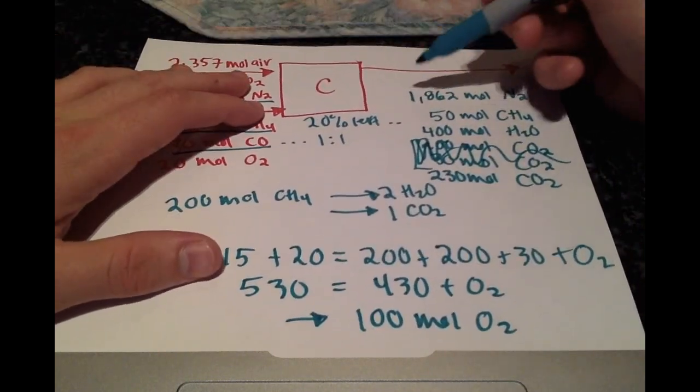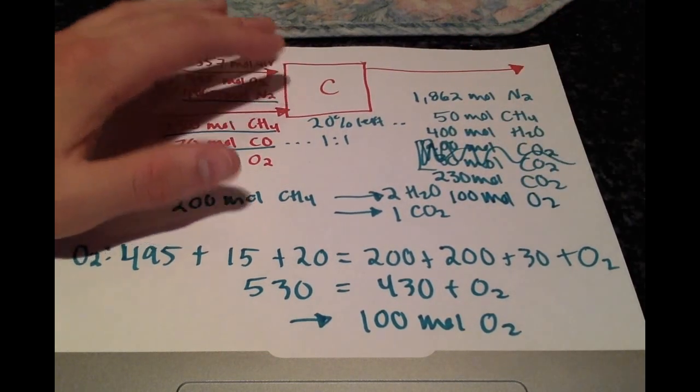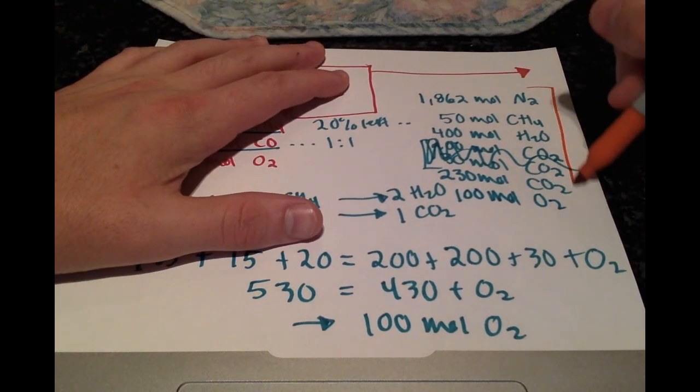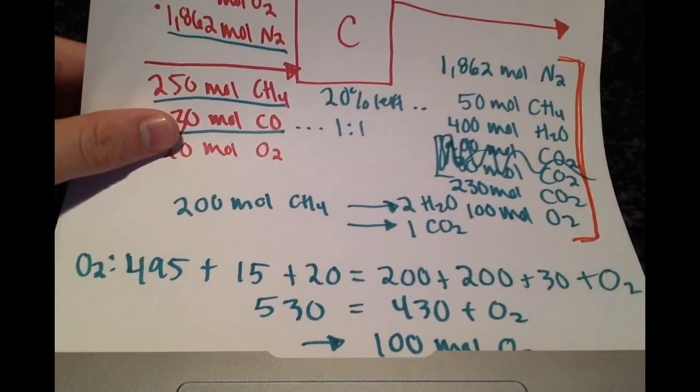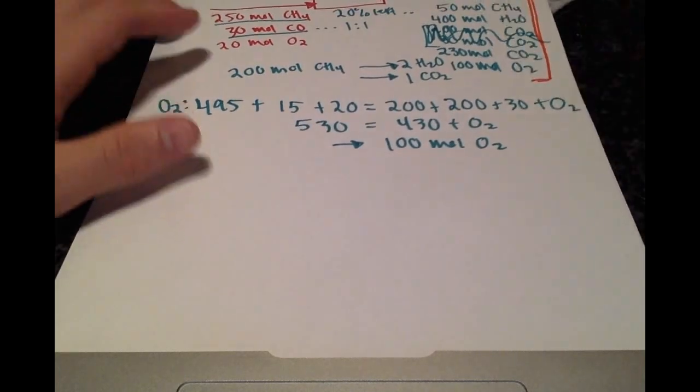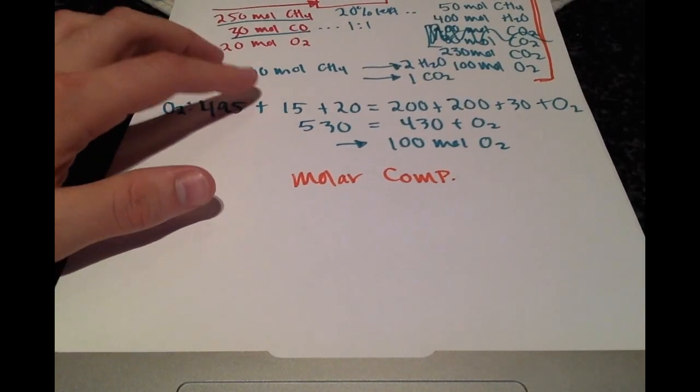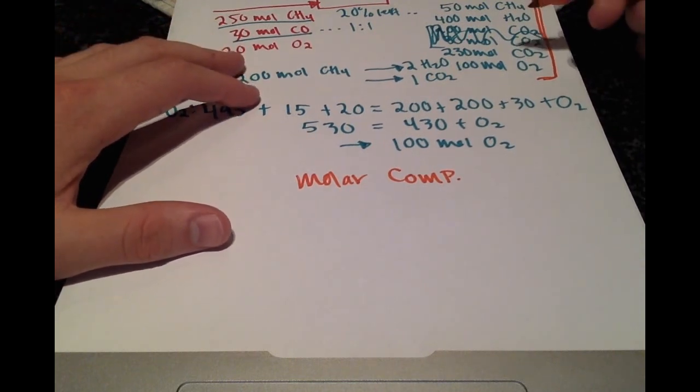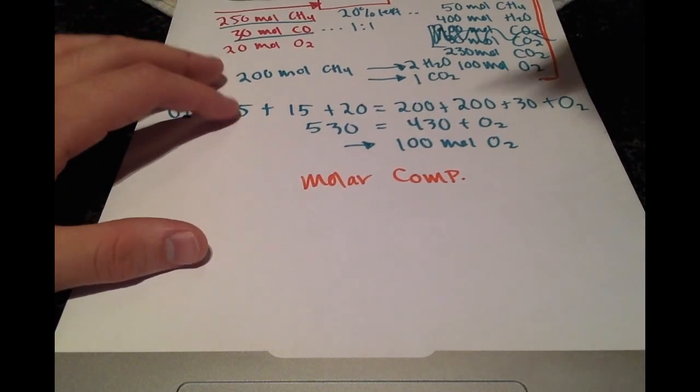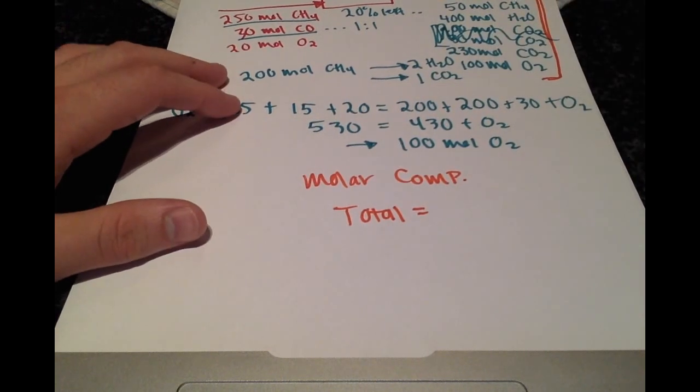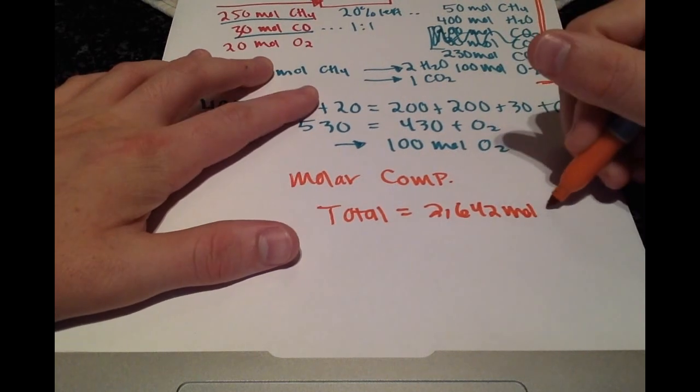We can write that here, 100 moles of O2, and this is our total composition, all the different components of our moles coming out. What we want to do is calculate the molar composition. We get that by taking the mole of each component, dividing it by the total and then multiplying by 100. First we need the total. Adding up all these we get 2,642 moles total.